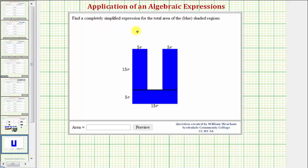We want to find a completely simplified expression for the total area of the blue shaded regions. Notice how the blue region is a U-shaped region which consists of three rectangles, but if you look closely, all the rectangles have the same dimensions.